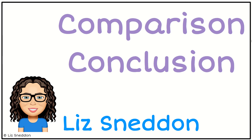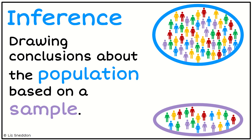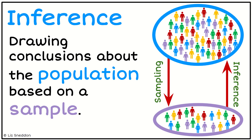Hi, it's Liz Nedden. Let's have a look at comparison conclusions. So we've got this idea of our population up top and our sample down the bottom. We started by taking a sample from our population in order to understand, and now we're going to use that sample information to make an inference about the population.